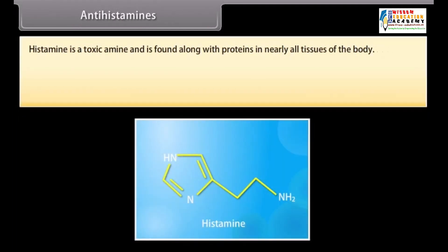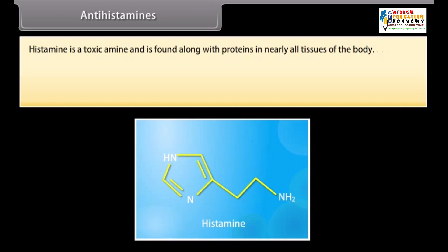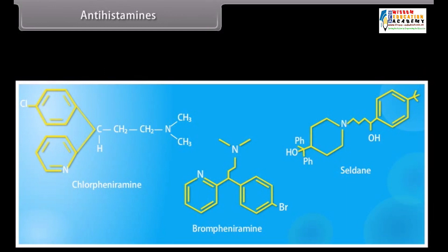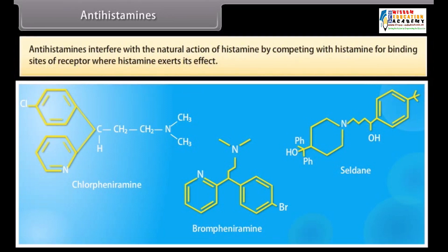Antihistamines: histamine is a toxic amine and is found along with proteins in nearly all tissues of the body. A number of sensitizing substances called antigens derived from food products, pollens, dust, human hair, and sheep wool may cause the release of free histamine in the body, which causes symptoms associated with allergies, hay fever, and the common cold. An antihistamine relieves these symptoms by blocking the action of histamine. Antihistamines interfere with the natural action of histamine by competing with histamine for binding sites of receptor where histamine exerts its effect.